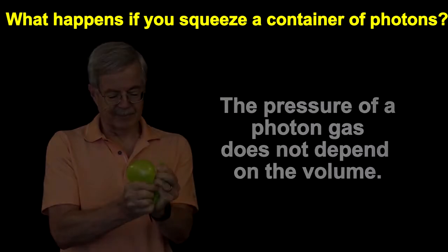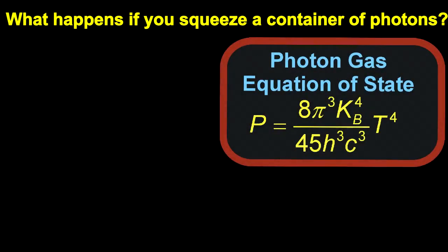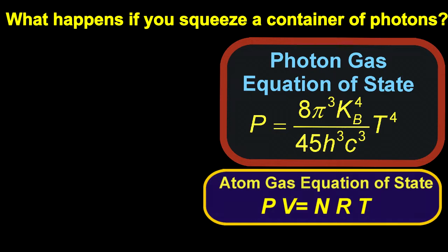How can that be? Well, here's the relationship between pressure, temperature, and volume for a photon gas. It's called the equation of state and it's equivalent to our familiar PV equals nRT for gases of molecules.